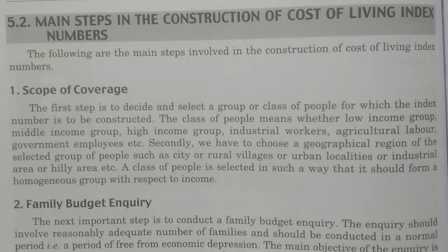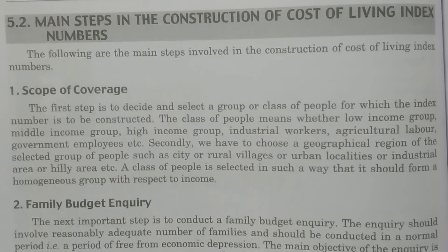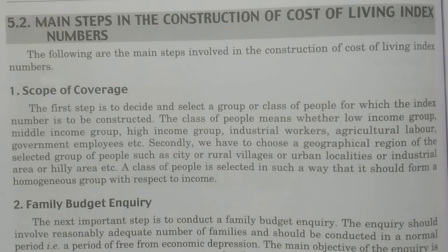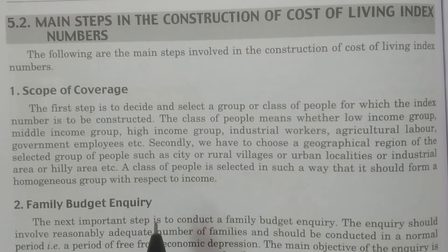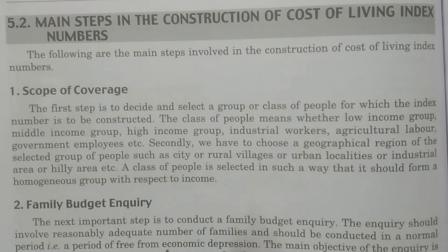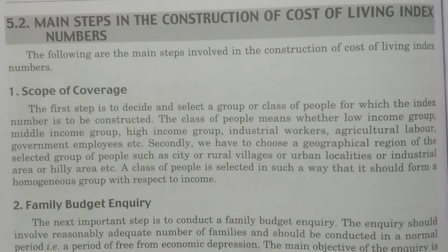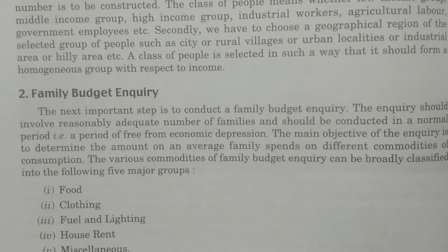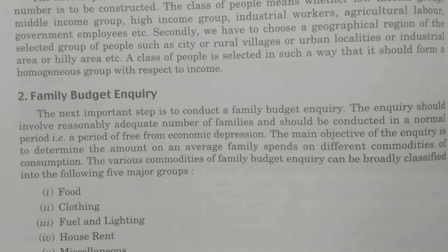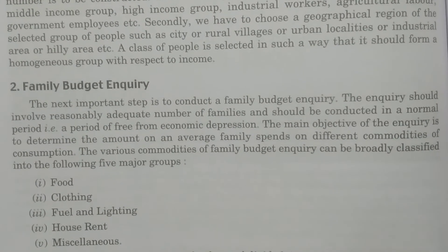The class of people is selected in such a way that it should be a homogeneous group with respect to income. The main intention is to calculate the cost of living index number for people having the same income group — whether low, high, or middle income. This scope of inquiry is taken first. After selecting the region and the class of people regarding a particular income group, you then proceed to the family budget inquiry.